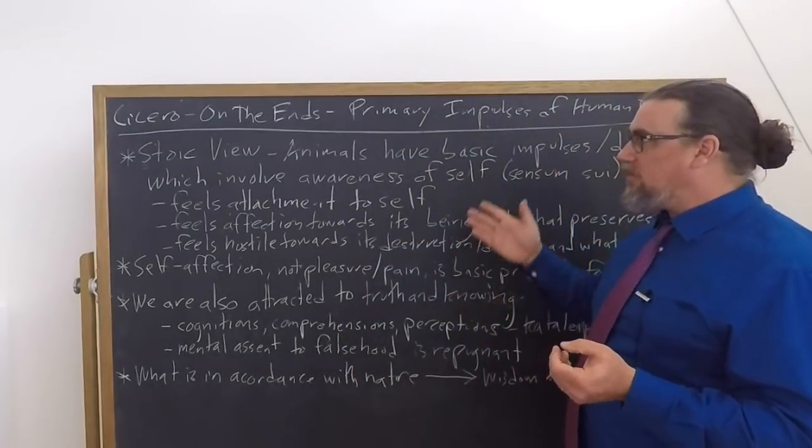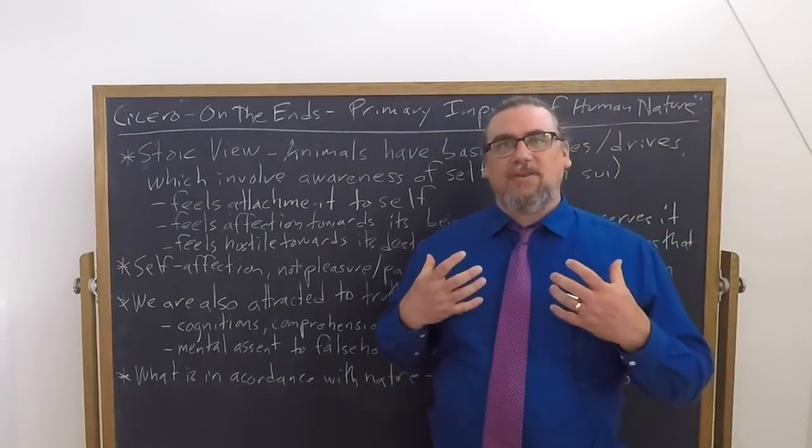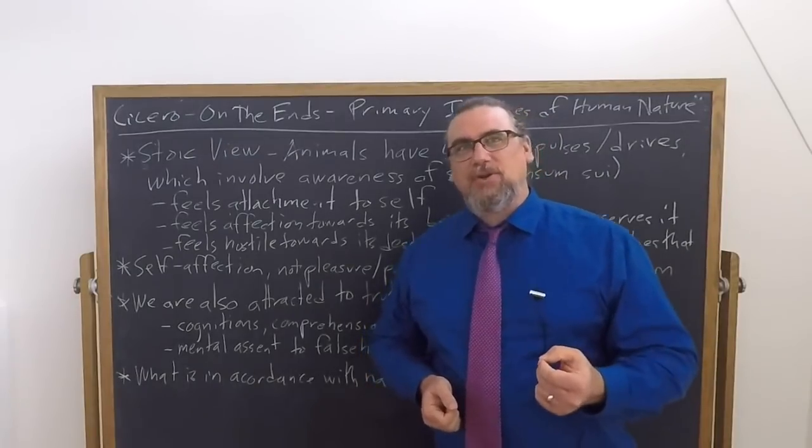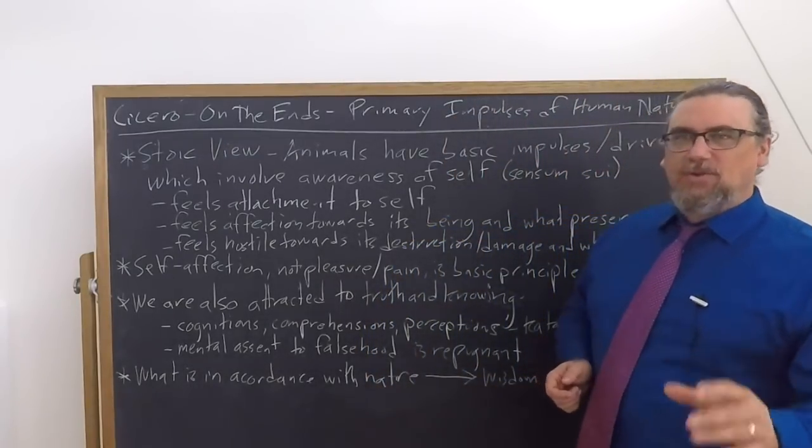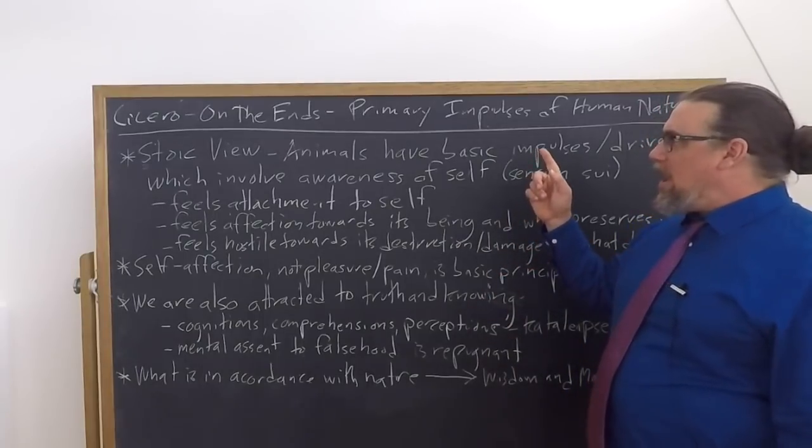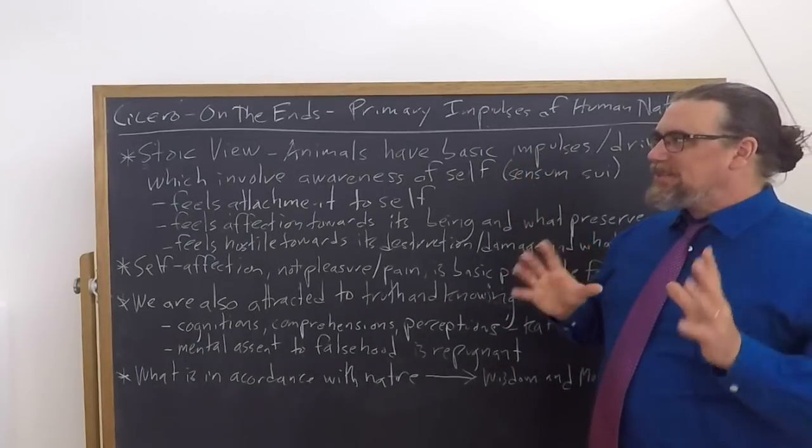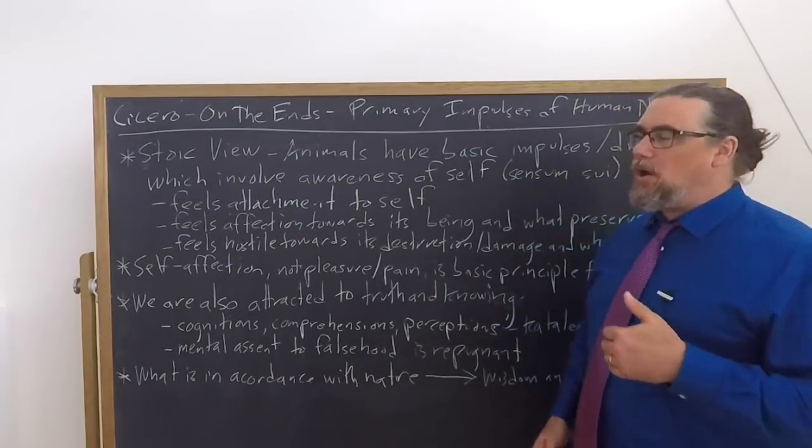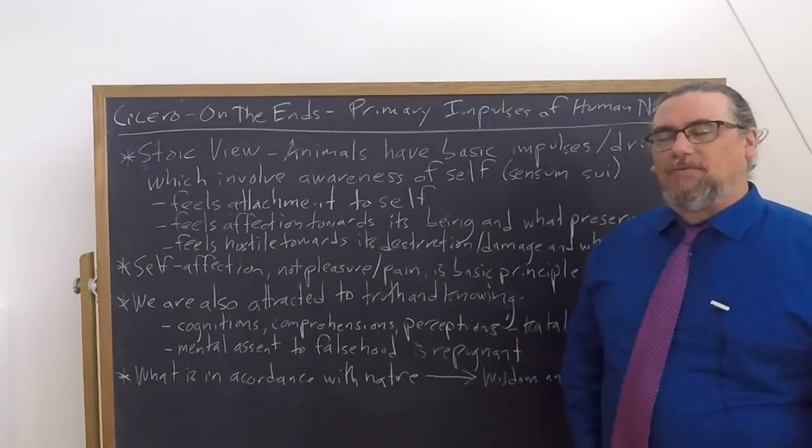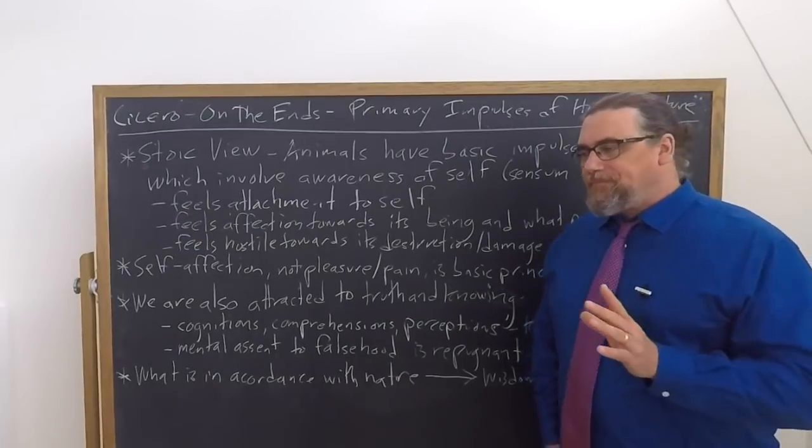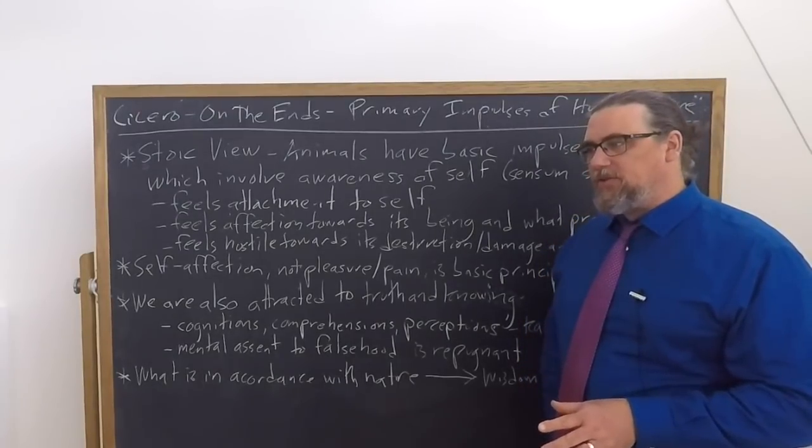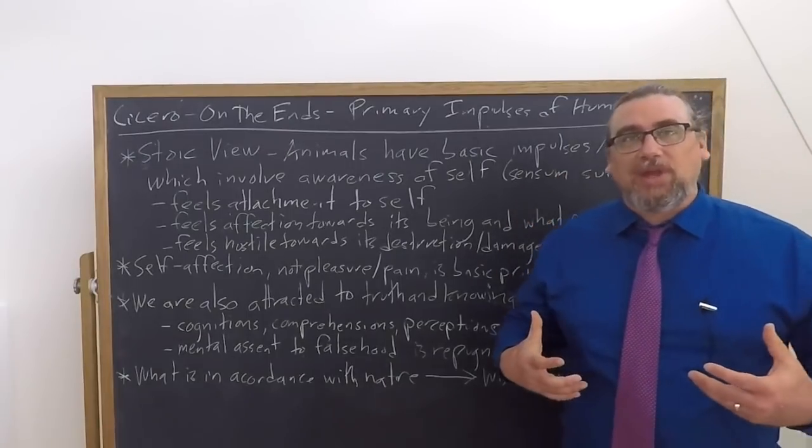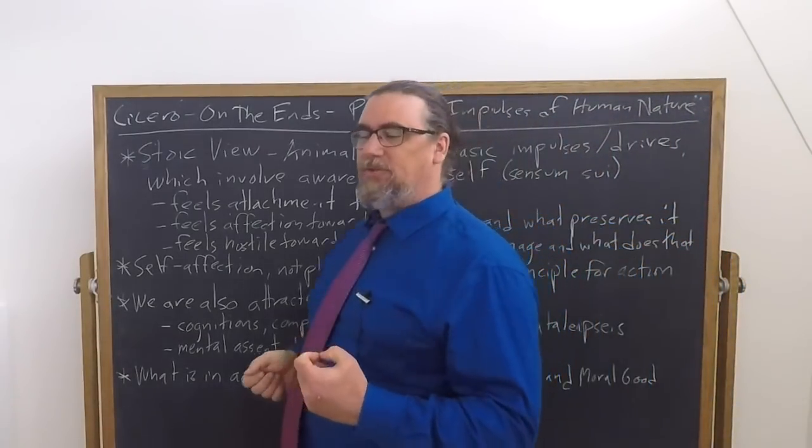The idea is that all animals, everything that is animate, everything that has perception, that has locomotion to whatever degree animals do, have a certain basic set of impulses, which involve what we could call awareness of self. A little bit later in the discussion, Cicero is going to use the term sensum sui, being conscious of oneself, being perceptive of oneself.